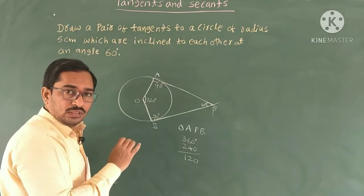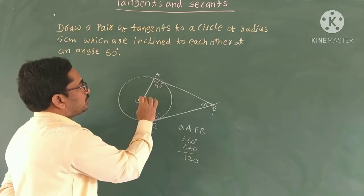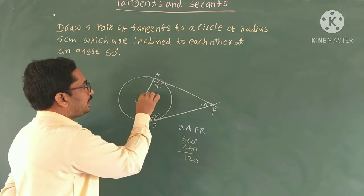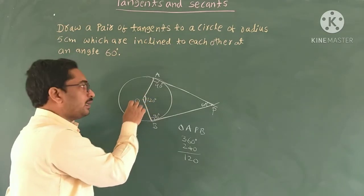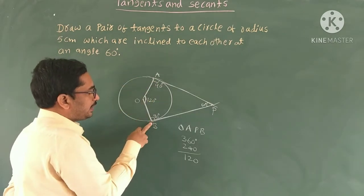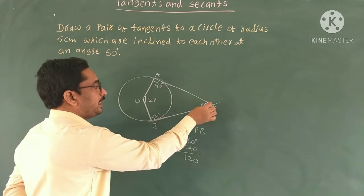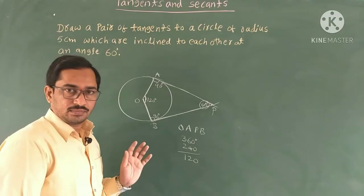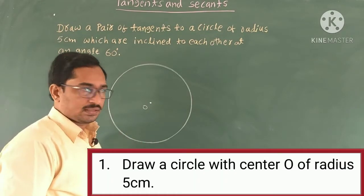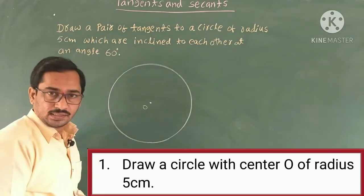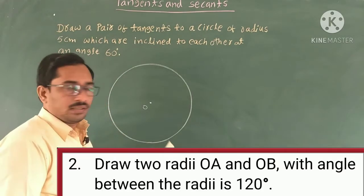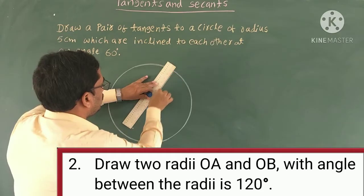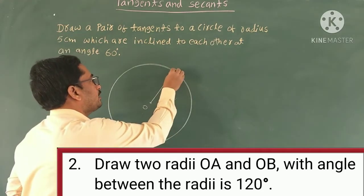Listen carefully. First we have to draw a circle of radius 5 centimeters. Next, draw a radius OA. We have to form an angle of 120 degrees at O, 90 degrees at A, and 90 degrees at B — then automatically the angle at P will be 60 degrees. This is the rough diagram. Now we have to draw the actual diagram. The circle has a radius of 5 centimeters. Draw a radius and locate the point A.